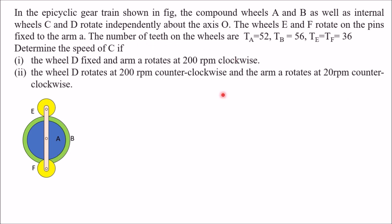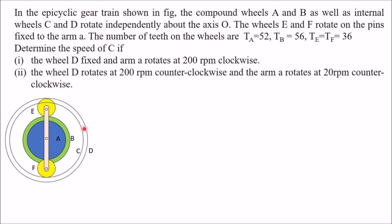Wheel E is connected with B and wheel F is connected with A. Internal wheel C has internal teeth and is in mesh with gear F. Internal wheel D has internal teeth and is in mesh with gear E. So D is connected with E and C is connected with F. We must determine the speed of internal gear C.